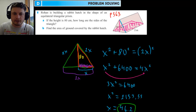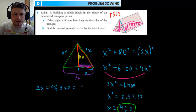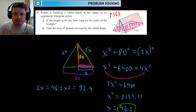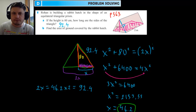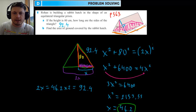One full side equals double that, so 2x = 46.2 × 2 = 92.4 centimeters. We rewrite the triangle with the side labeled 92.4 — that's the answer to question (a). Now for part (b), let's find the area covered by the ground. Since it's an equilateral triangle, all sides are 92.4, and the length of the prism is 200 centimeters (two meters).